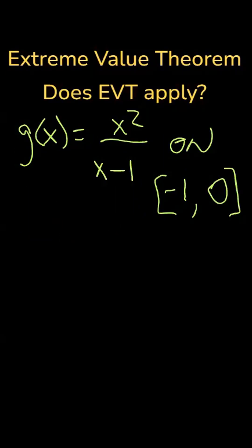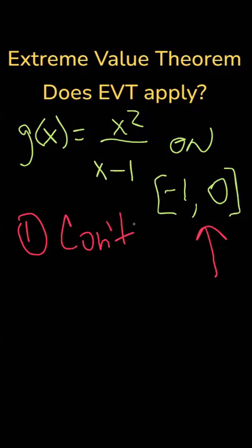How about this one? This is very similar to the one we did previously, x squared over x minus 1. First, we want to check, is the function continuous? The function has a discontinuity at x equals 1, but that is not on the interval. So, the function is continuous on the given interval. Second, is the interval closed? Yes, the interval is closed, the endpoints are included. Therefore, the extreme value theorem would apply to this function on this interval.